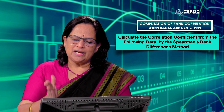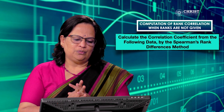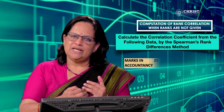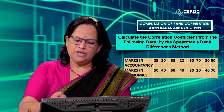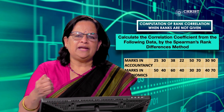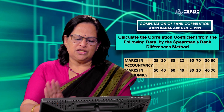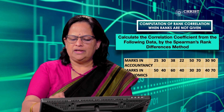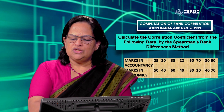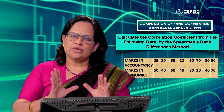Now for the second problem: compute correlation coefficient using the rank differences method — Spearman's rank correlation coefficient. Data given is marks in accountancy and marks in economics. Marks in accountancy: 25, 30, 38, 22, 50, 70, 30, and 90. Value 30 is repeated, so correction factor must be applied. Marks in economics: 50, 40, 60, 40, 30, 20, 40, and 70. Value 40 is repeated three times, so correction factor is needed here as well.